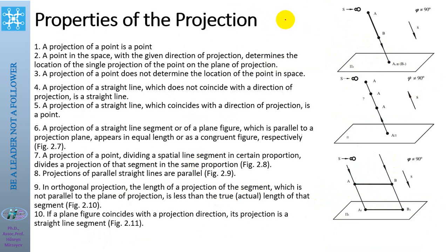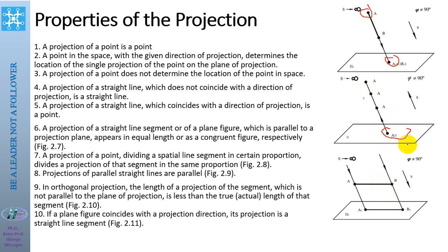About the properties of projections: the projection of a point is a point. A point in space with a given direction of projections determines the location of a single projection of the point on the plane of projections. However, a projection of a point does not determine the place of the point in space.